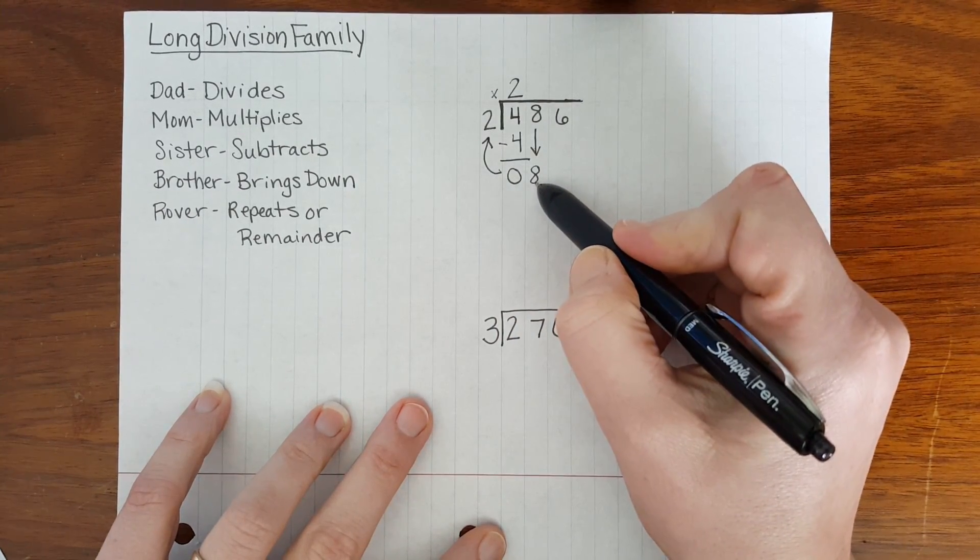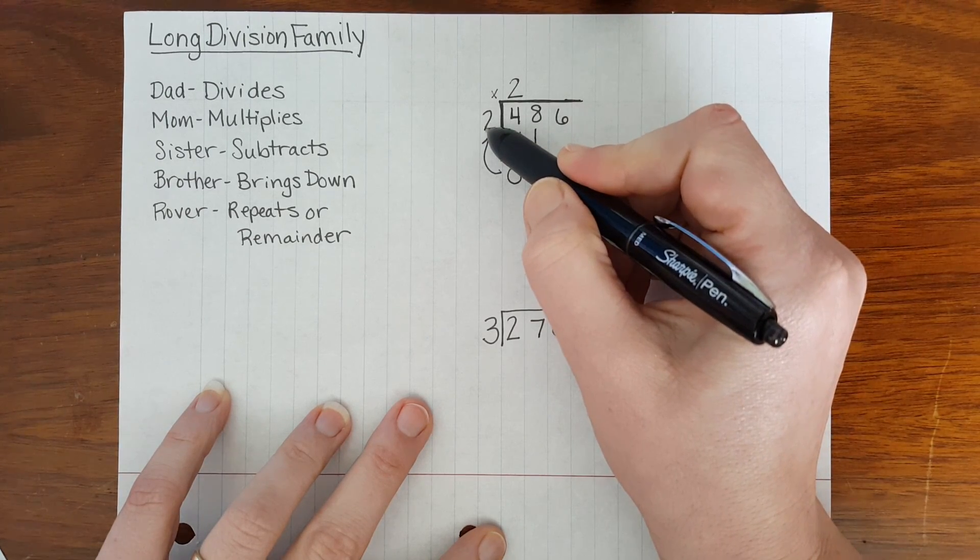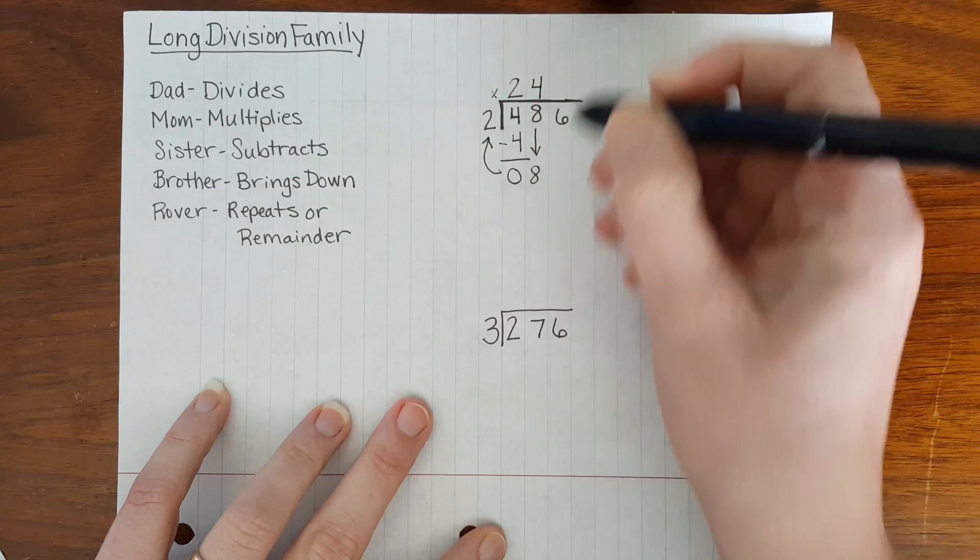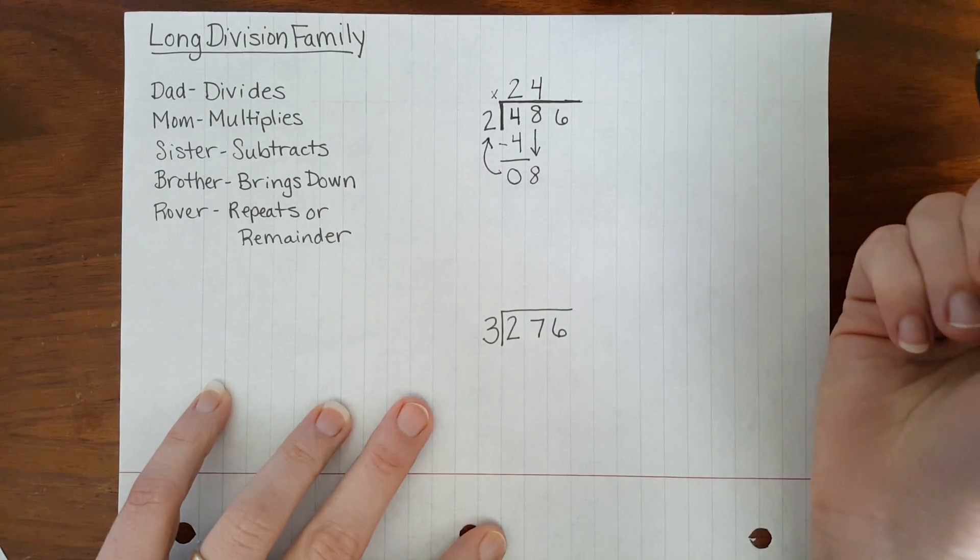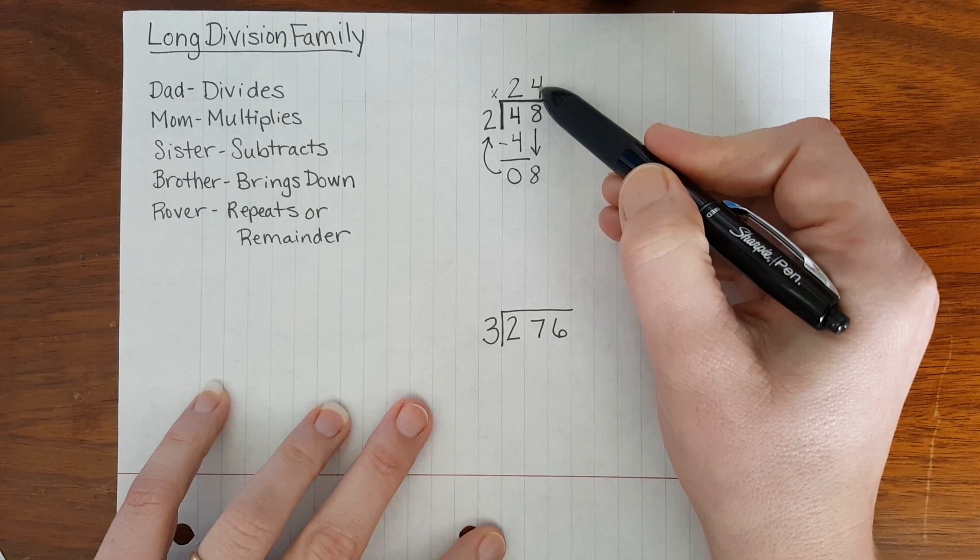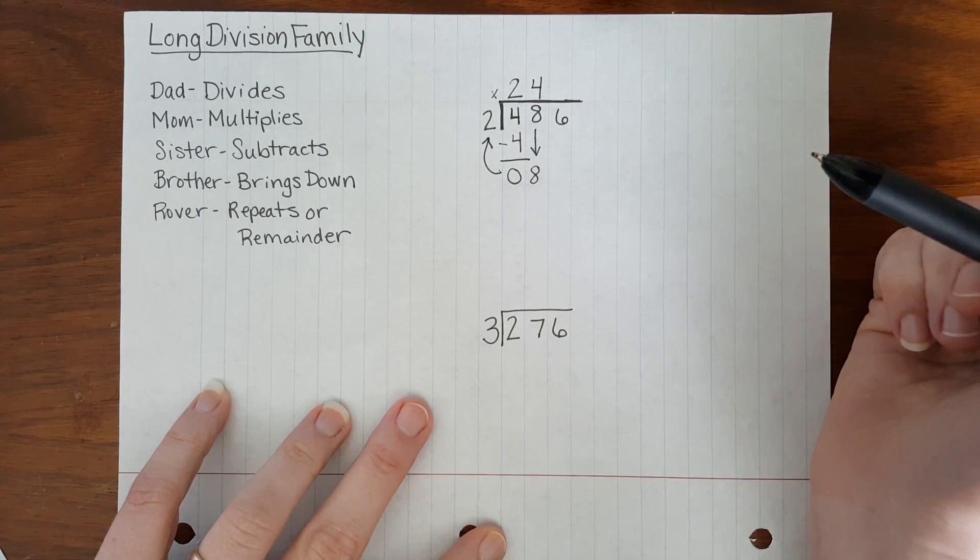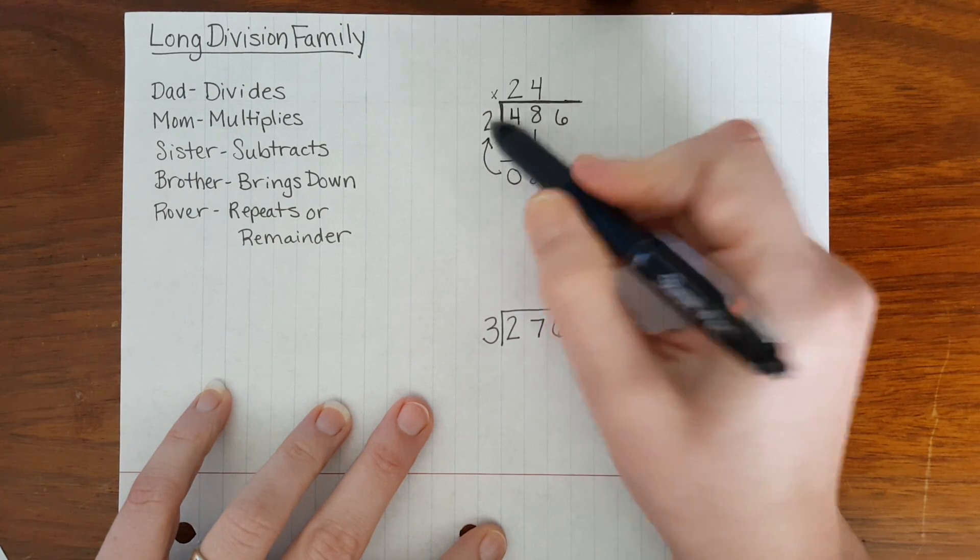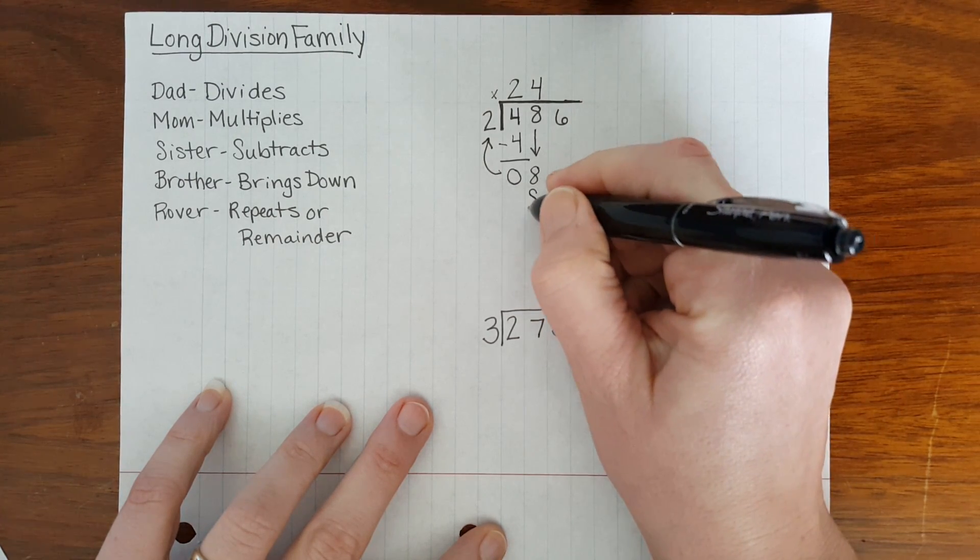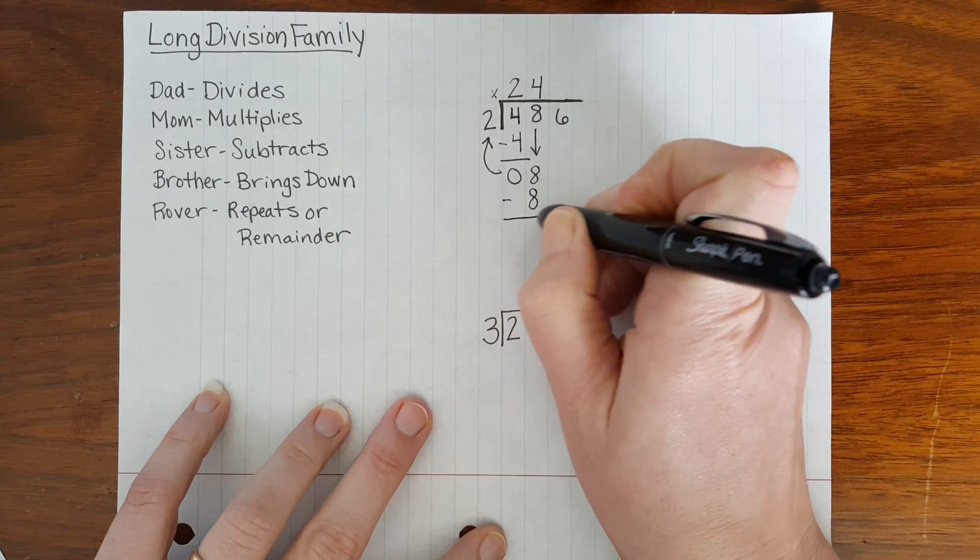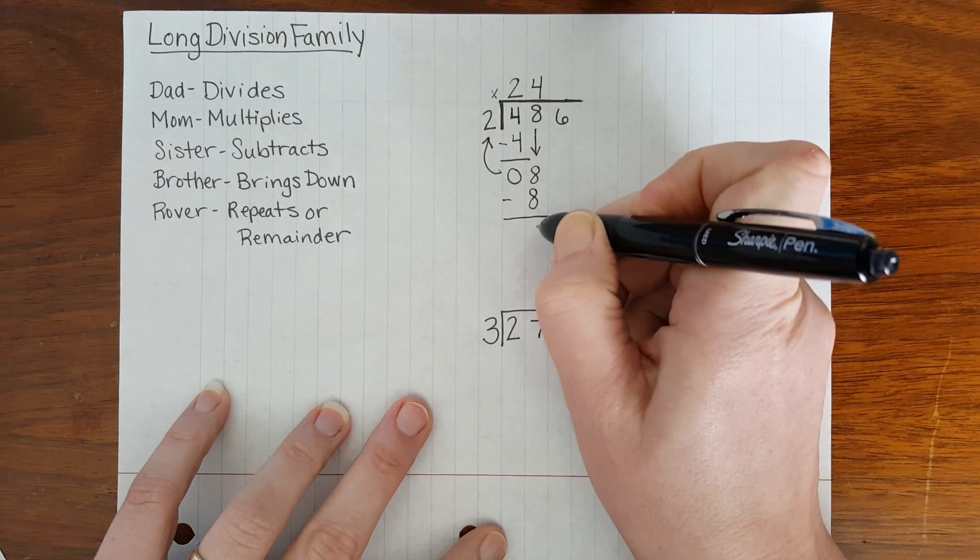Dad says 8 divided by 2 equals 4. 8 divided by 2 is a simple division fact. So he places his answer to that problem in our quotient. Mom double-checks and says 4 times 2 equals 8. She places her answer down. So sister can subtract. 8 take away 8 is 0.